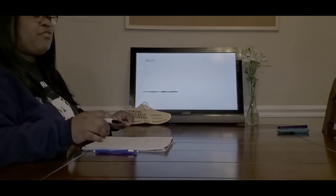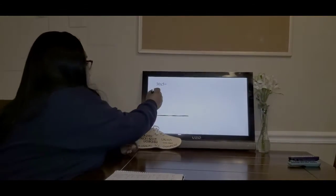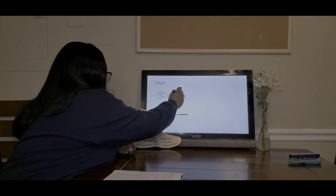I'm going to multiply 30, the number of rows, times 5, the number of seats in each row. So the first thing I'm going to do is rewrite my problem, 30 times 5.